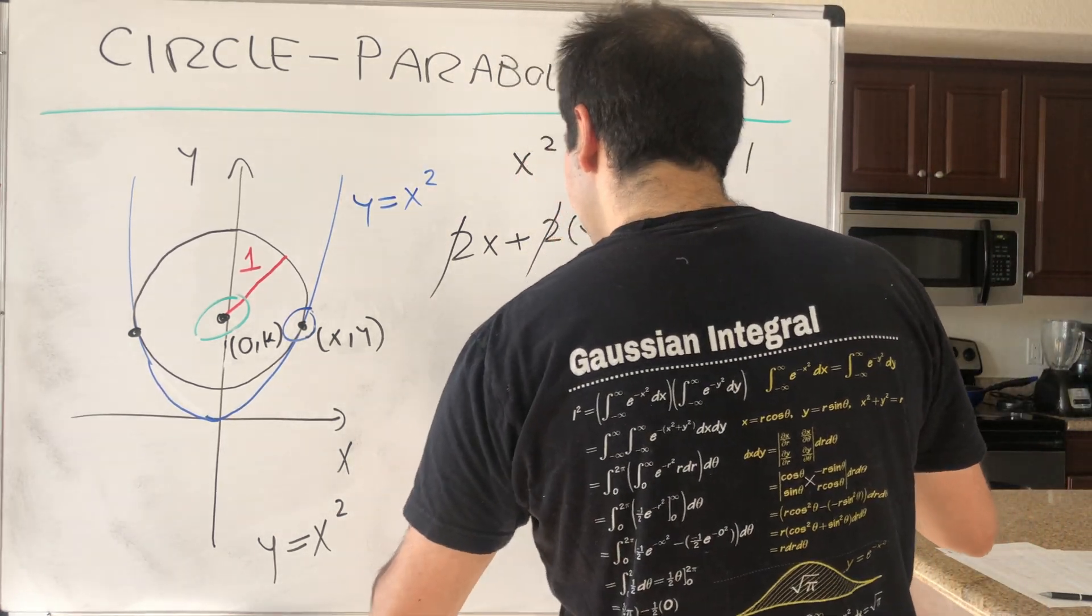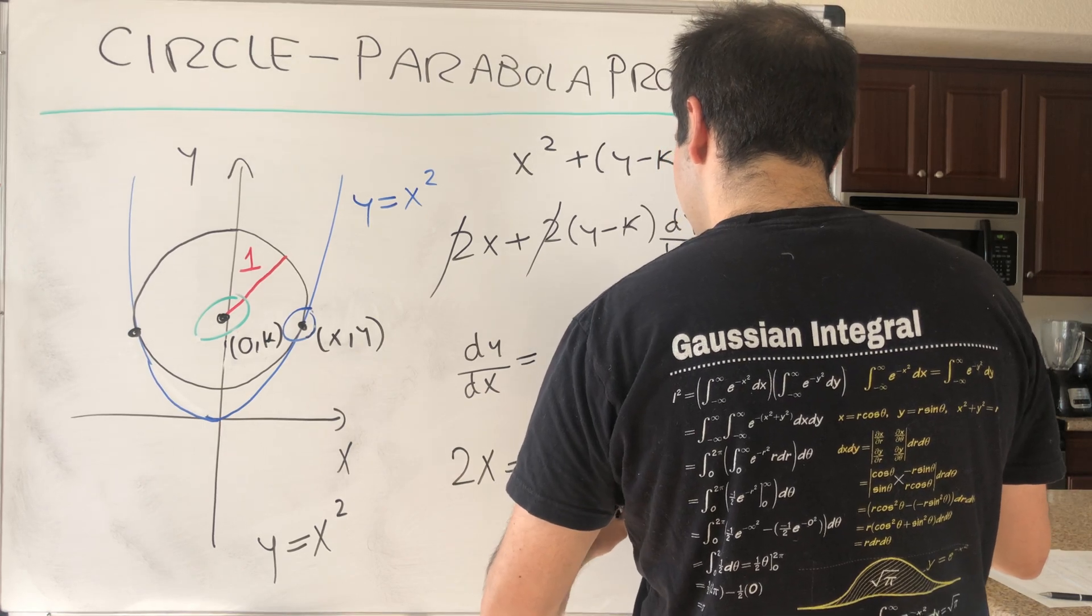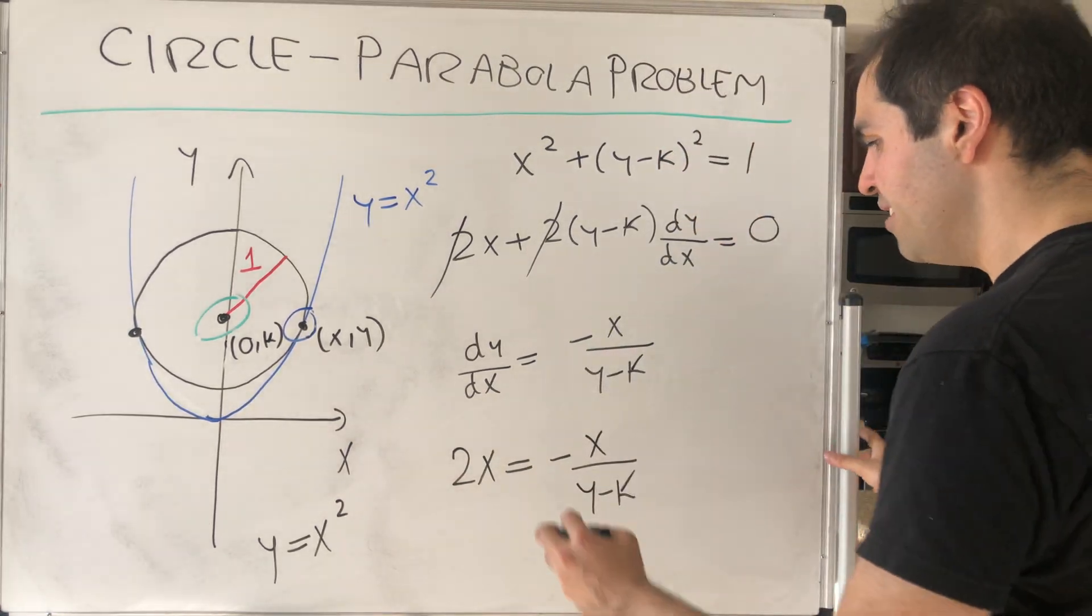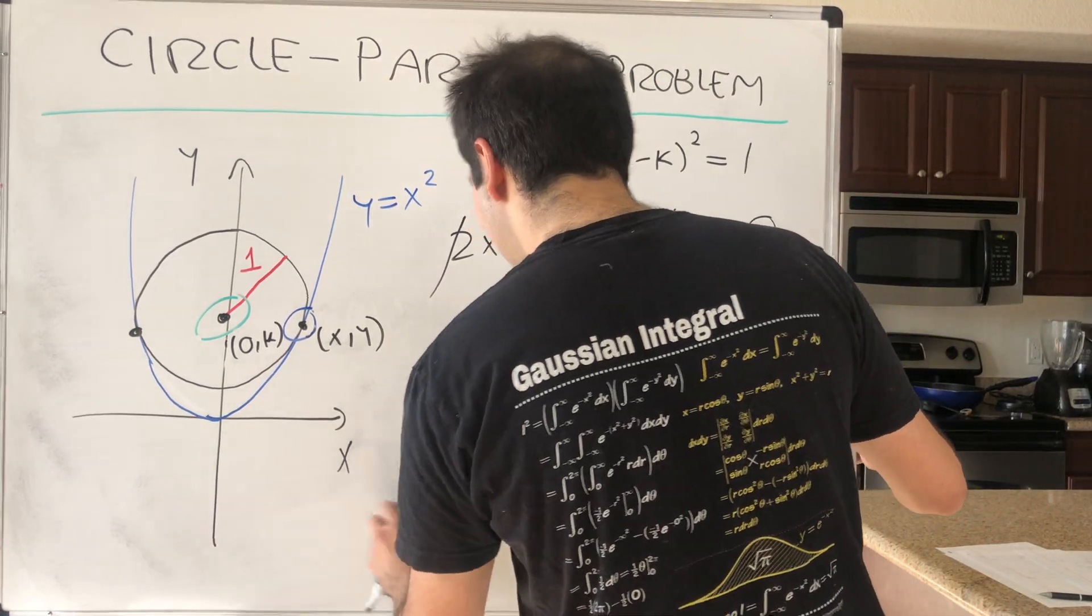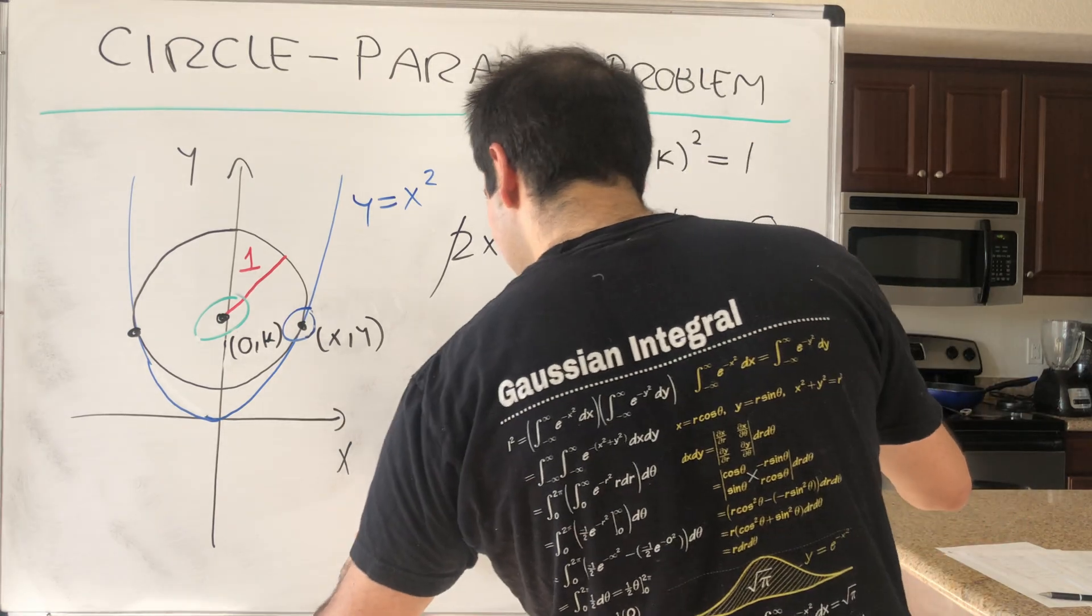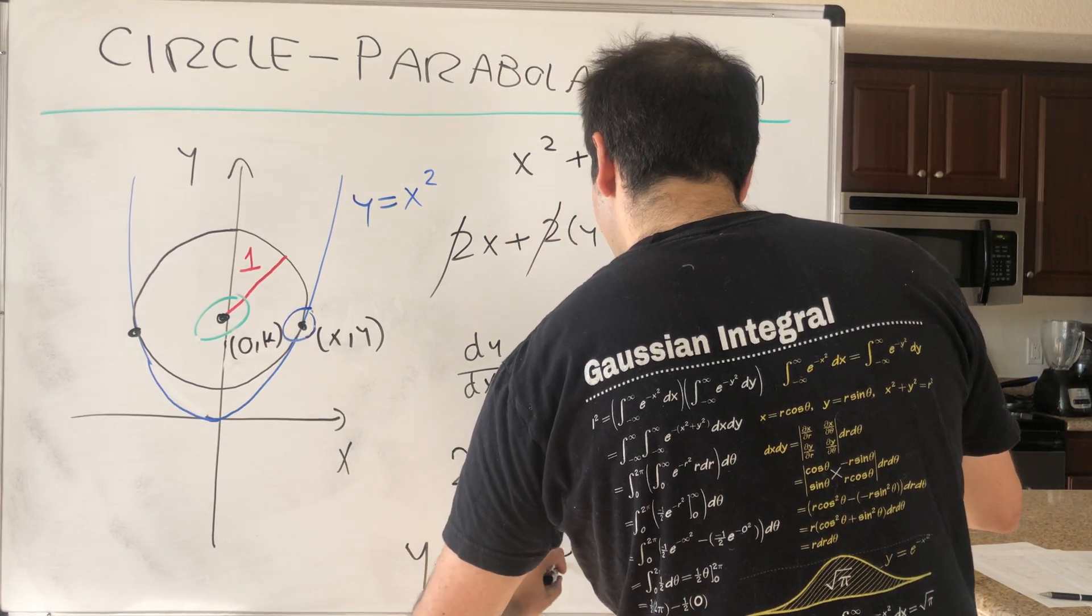So what we get now is 2x = -x/(y - k). And then, you can cancel out the x, again assuming it's non-zero, and you essentially get that y - k = -1/2.